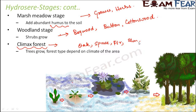So these were the various stages of hydrosere: starting with the plankton stage, then the submerged stage, floating stage, reed swamp stage, marsh meadow stage, woodland stage, and finally the climax forest. Remember the category of plants and examples of a few plants belonging to each stage.